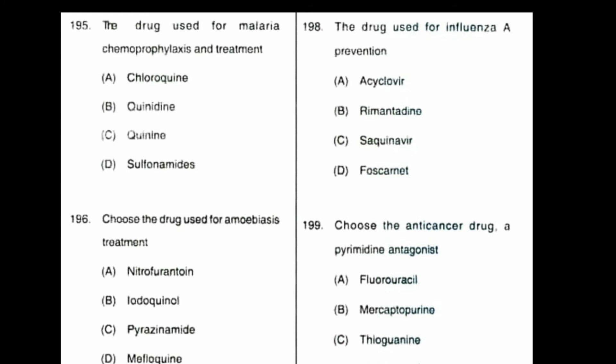Question number 196: choose the drug used for amoebiasis treatment. Option A: nitrofurantoin, B: iodoquinol, C: pyrazinamide, D: mefloquine. The correct answer is option B, iodoquinol.